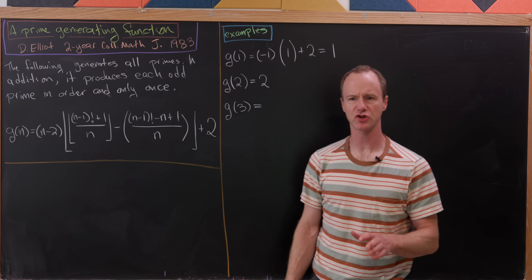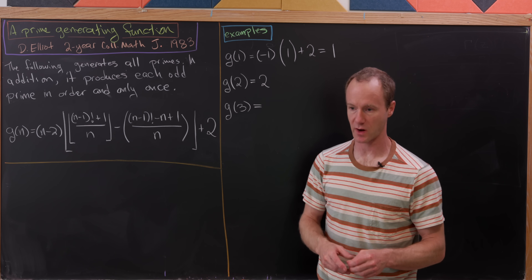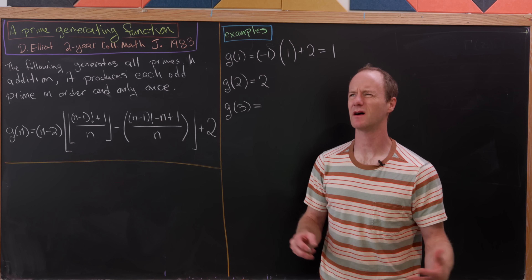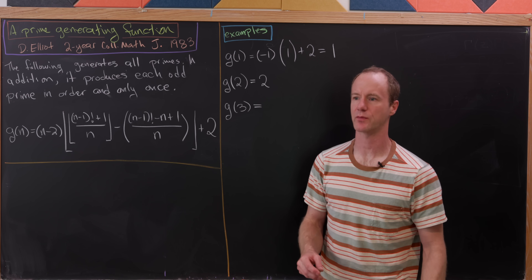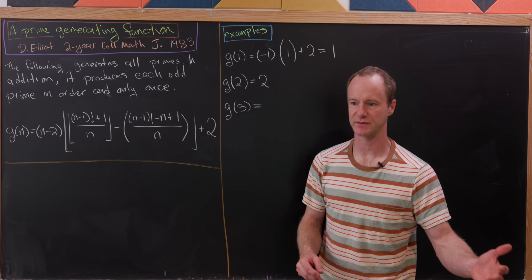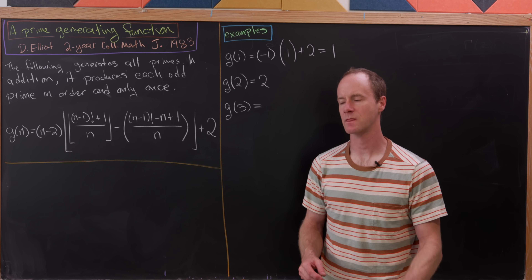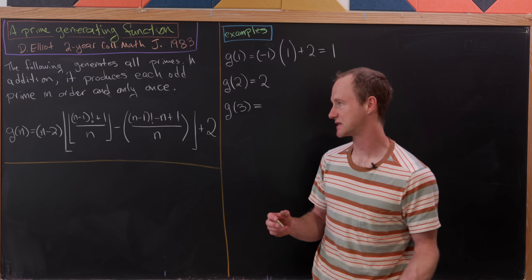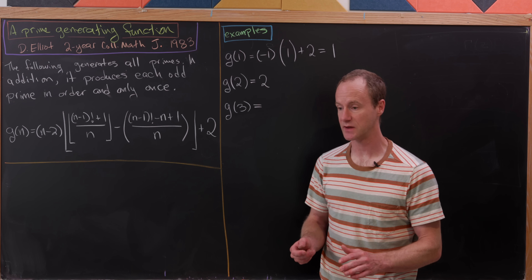Today we're going to look at a very nice function that generates all of the prime numbers. You might say, doesn't the identity function generate all the prime numbers? It just takes all composite numbers to themselves, but then all prime numbers to themselves also. That's most definitely true, but that can't be used as a test. This one can be used as a test.